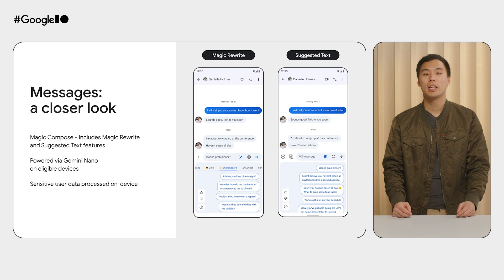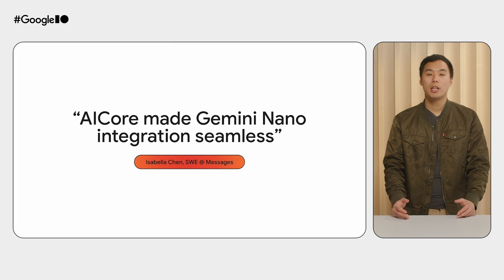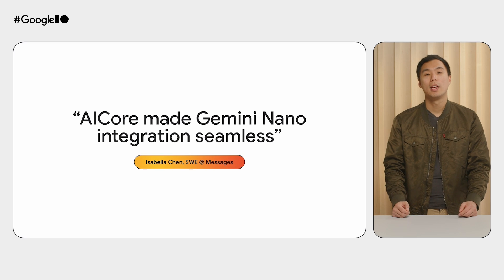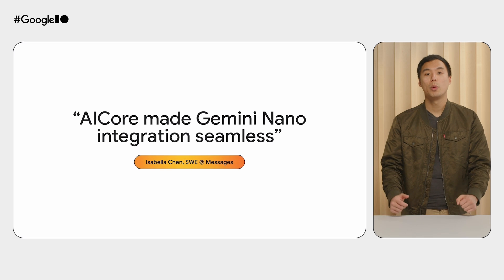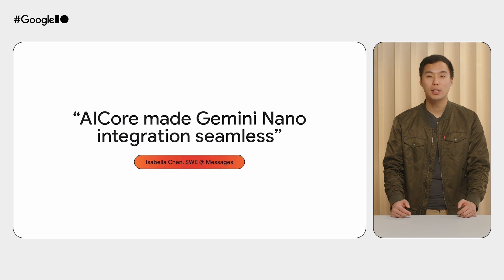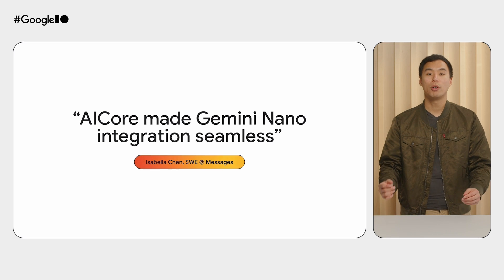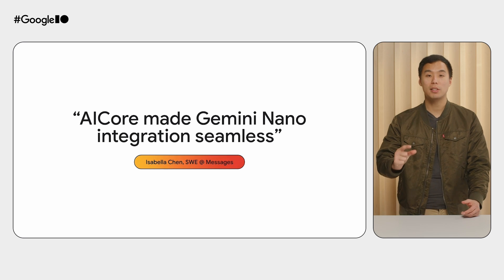This is just the beginning — expect more amazing Gemini Nano-powered features delivered using AI Core in Messages. Here's a summary of their experience in the Messages team's own words: AI Core made integration with Gemini Nano seamless. We didn't need to manage model hosting, downloading, versioning, or updating. All of that was done on our behalf, and we could focus on fine-tuning the model for the best output.